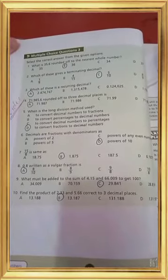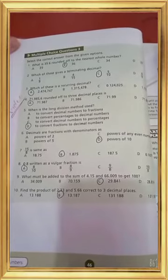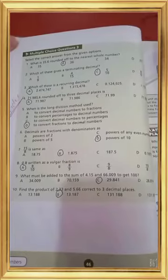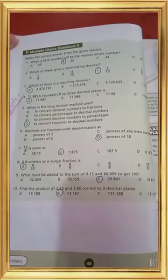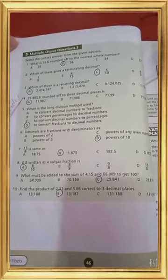71.9856 rounded off to 3 decimal places. Look at this 4th decimal place. It's a 6. Then 6 is greater than 5, so we add one number in 5. It's a 6. 71.986.